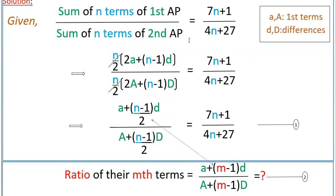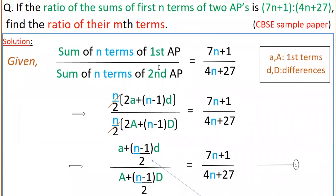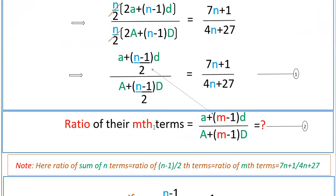The ratio of their mth terms is equal to a plus m minus 1 into d divided by A plus m minus 1 into D. Observe that in the sum formula we have a plus (n minus 1)/2 into d, and in the mth term formula we have a plus m minus 1 into d.